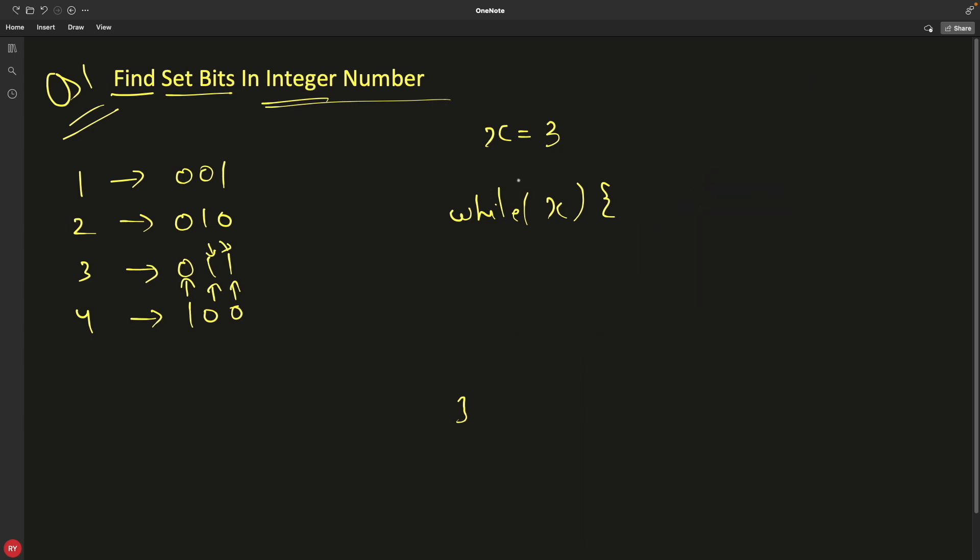Let me show you that. Now we have the same while loop. x is 3. Let's say we have count is equal to 0 for now. We'll come inside this and we have this if. If x and operation 1 is true, then we have this count plus plus. Otherwise, what we'll do? x is equal to x right shift 1. That's it. This is the whole magic. I have already explained you like how to find if some number is odd or even.